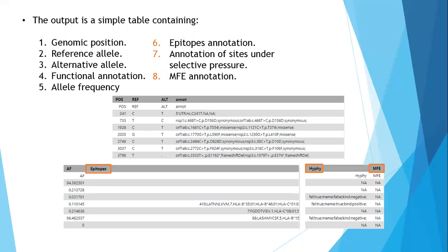It is important to underline that the information highlighted in orange, both in the list and in the example output picture, are all unique to Corgat-derived functional annotations.